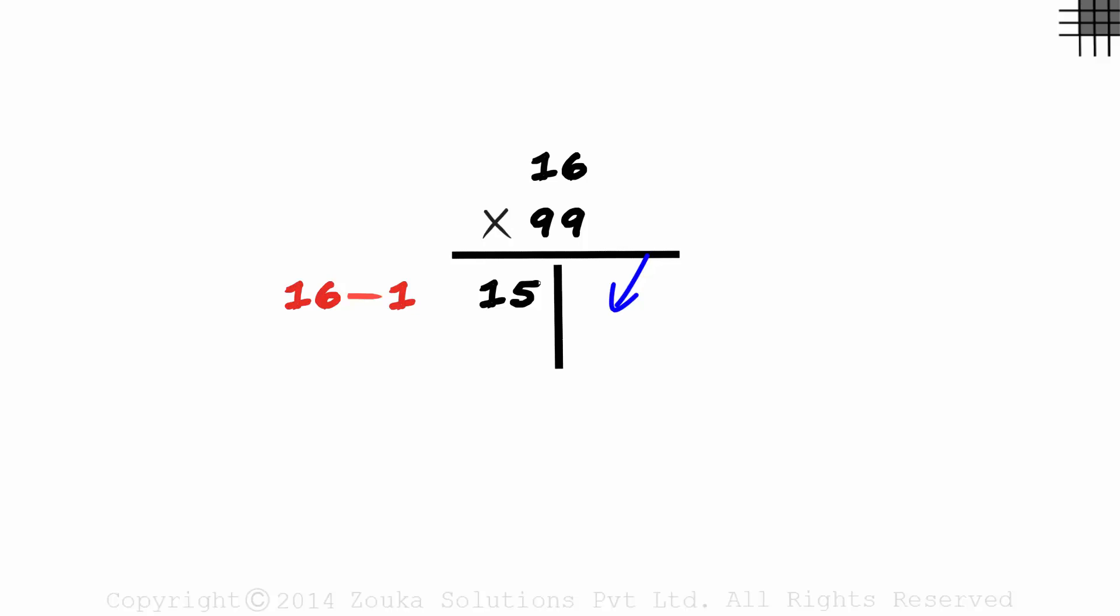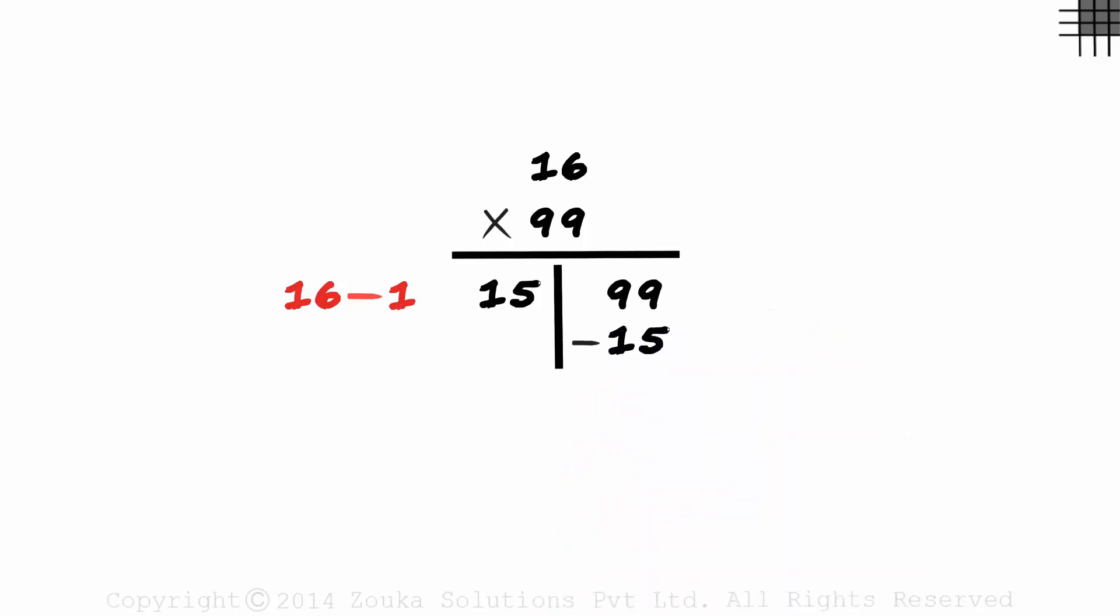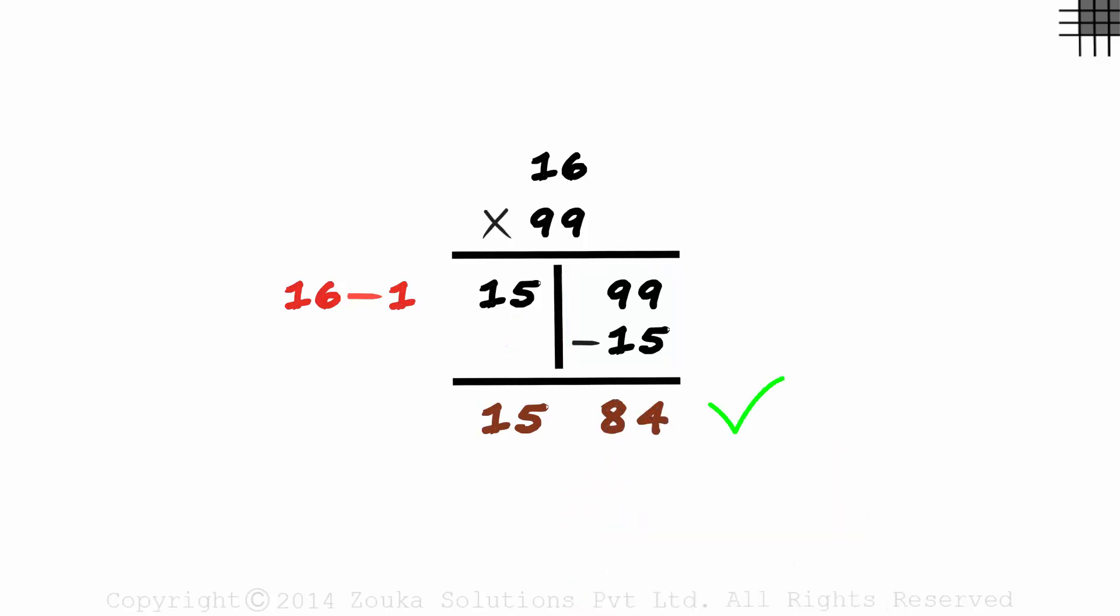And on the right, we simply subtract this fifteen from ninety-nine. So ninety-nine minus fifteen on the right. We get fifteen down and ninety-nine minus fifteen is eighty-four. That's the correct answer. Sixteen times ninety-nine is one thousand five hundred and eighty-four.